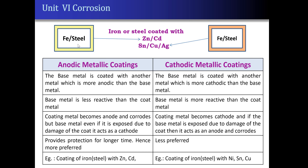For example, iron or steel when coated with zinc or cadmium — zinc and cadmium are more reactive than iron or steel. So, even if there is any rupture or damage in the coating, only zinc or cadmium will undergo corrosion but the base metal is protected. Therefore, this type of coating is more preferred.